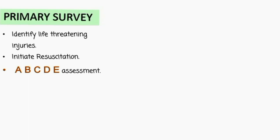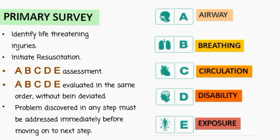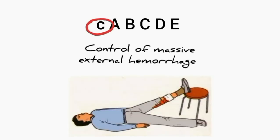In the primary survey: A is for airway, B for breathing, C for circulation, D for disability, and E for exposure. The ABCs are evaluated in the same order without debate, and any problem discovered must be addressed immediately before moving on to the next step. Some books also add a small C before A, which stands for control of massive external hemorrhage.